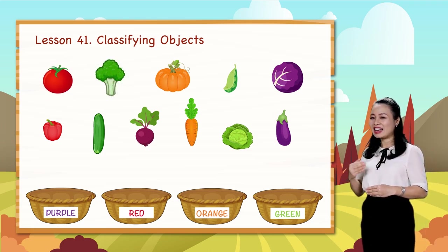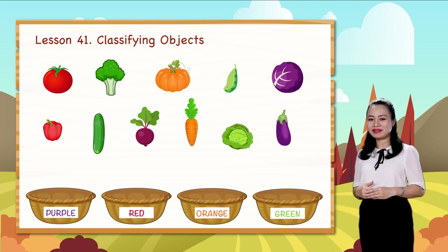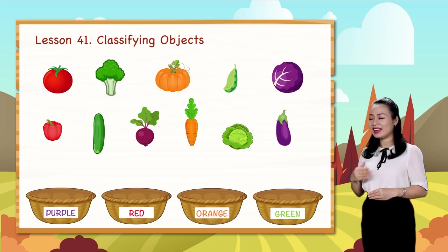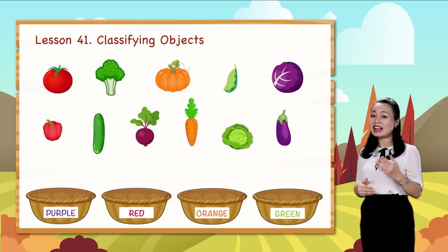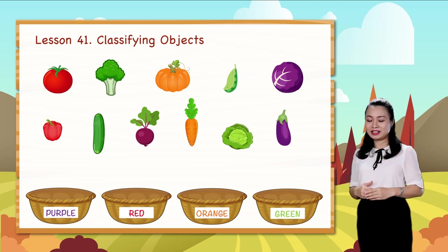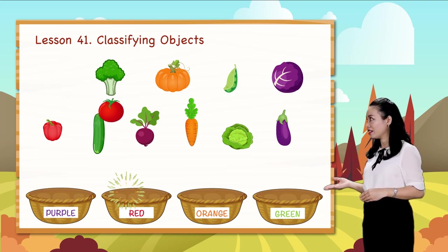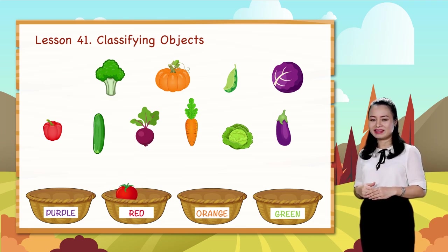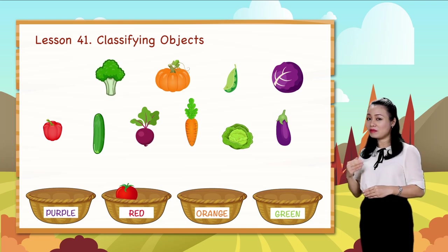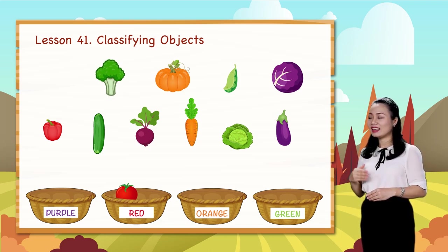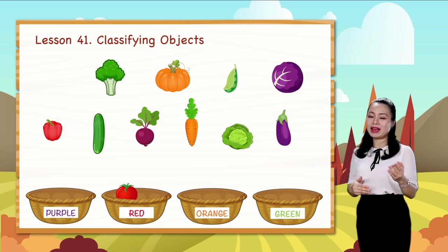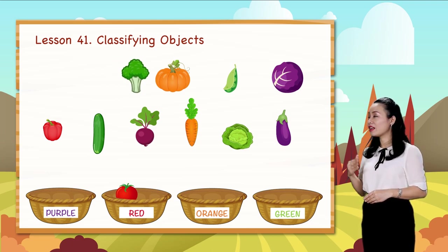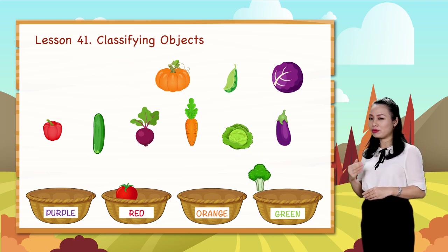This is a tomato. It's red. Let's paste it into the red group. This is a broccoli. It's green. Let's paste it into the green group.